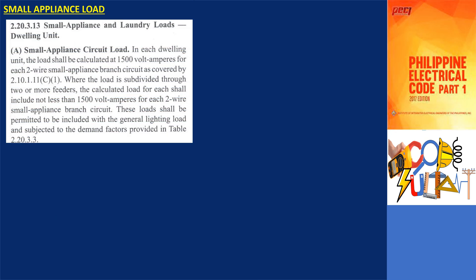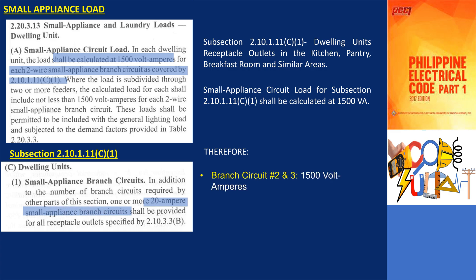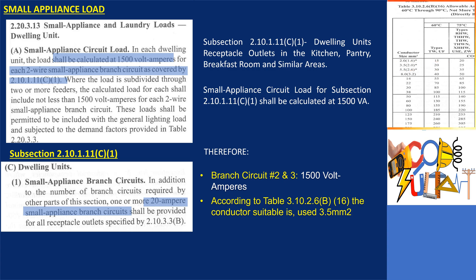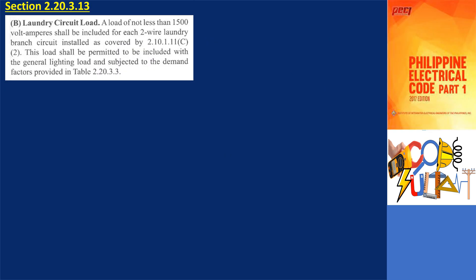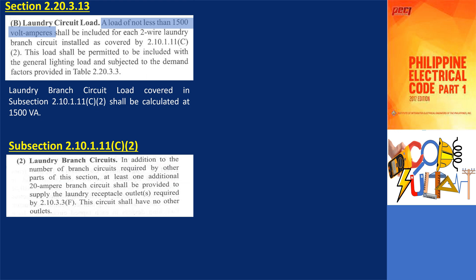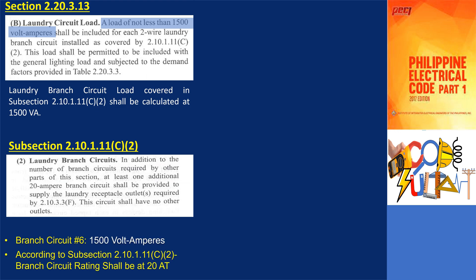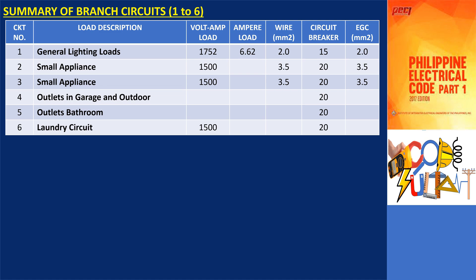For circuits 2 and 3, small appliance branch circuits, as stated in section 2.20.3.13, these circuits shall be calculated at 1,500 volt amperes, and the rating of branch circuits shall be 20 amperes. Therefore, for circuits 2 and 3, use 3.5 square millimeters for the circuit conductor and for the equipment grounding conductor. For the laundry circuit, as stated in section 2.20.3.13B, this circuit shall be calculated at 1,500 volt amperes and the branch circuit shall be provided by a 20-ampere rated, as specified in subsection 2.10.1.11C2. While for bathroom and garage circuits, a 20-ampere branch circuit shall be provided.